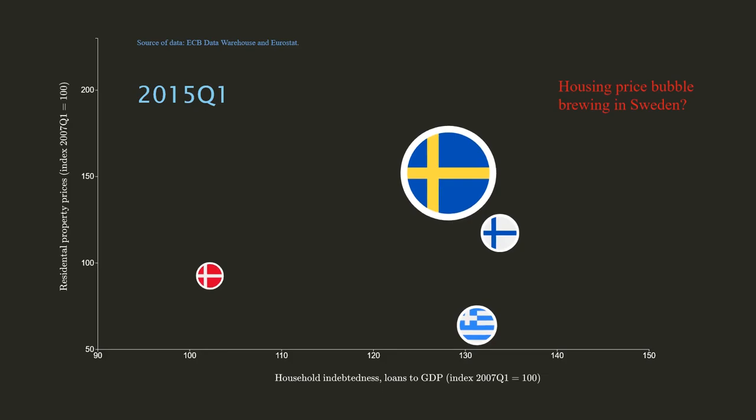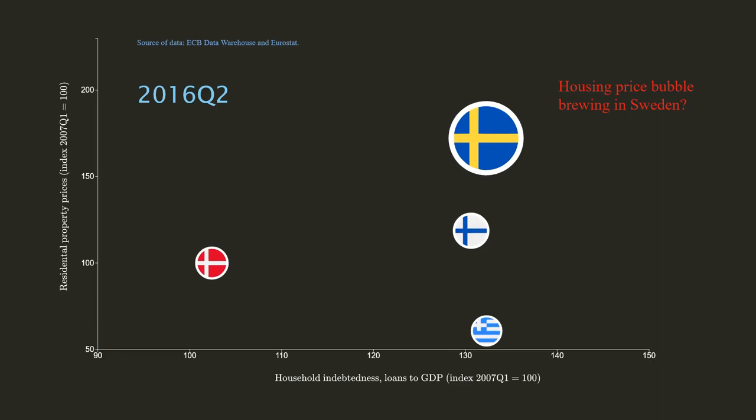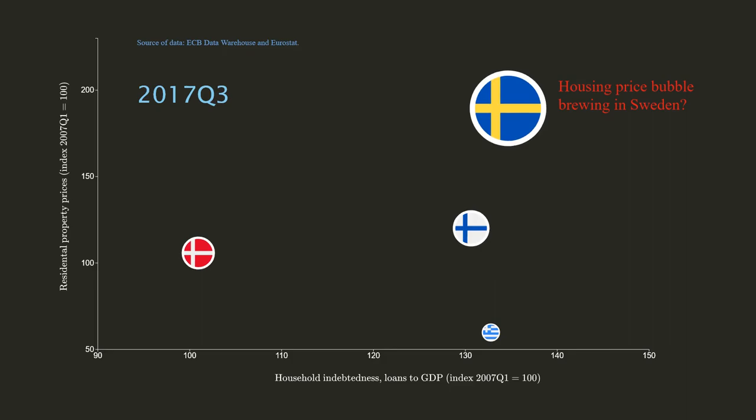In Sweden, residential property prices nearly doubled during the decade after the crisis. Although falling from the 2015 peak, estimated valuations remained high in the third quarter of 2017, indicating signs of a housing market bubble.